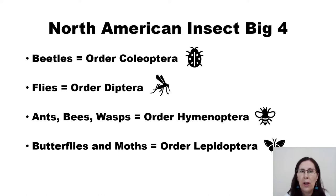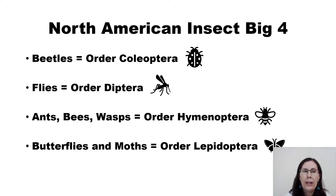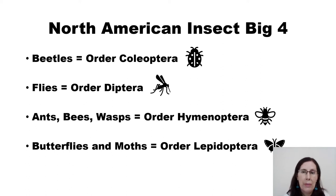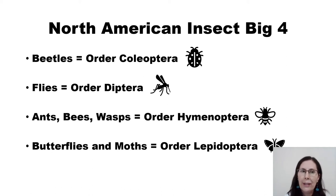The next group are flies. This is order Diptera. They have two wings — your mosquitoes and gnats are all in this category. The third one is ants, bees, and wasps. This is the order Hymenoptera. A quick way to remember something from Hymenoptera is that they're going to have four wings, but remember not all ants are going to have wings.